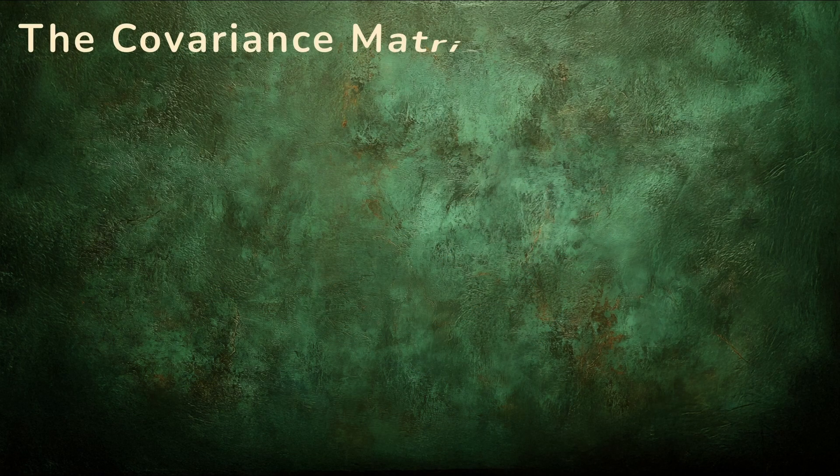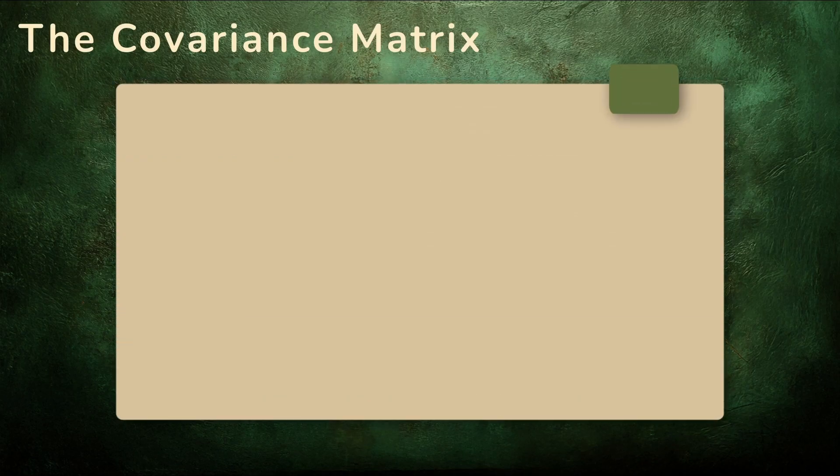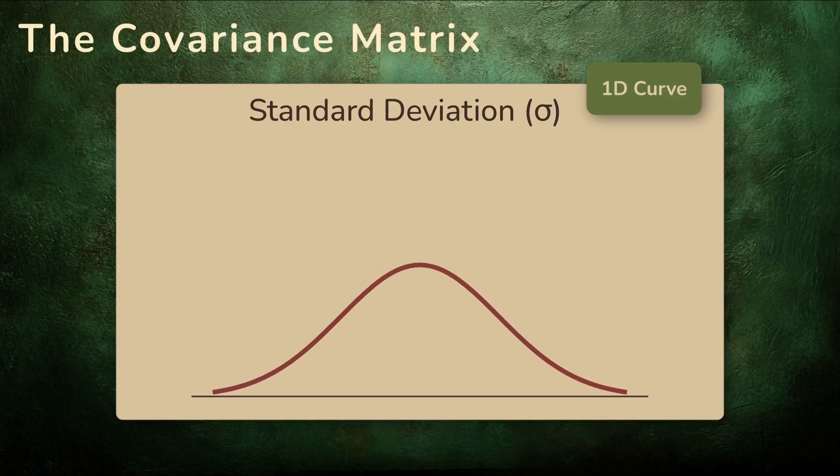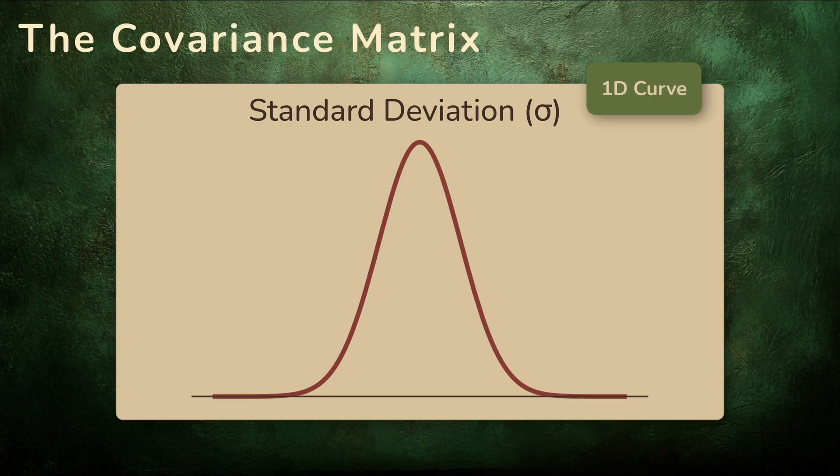The mean vector tells us the center, but it says nothing about the shape of the surface. In one dimension, the bell curve was described by two numbers. The mean told us the location of the center, and the standard deviation told us how wide the curve was. Location and spread, that was all we needed.